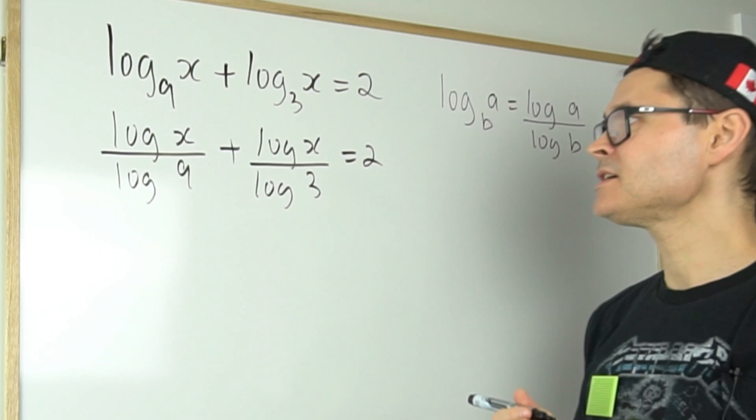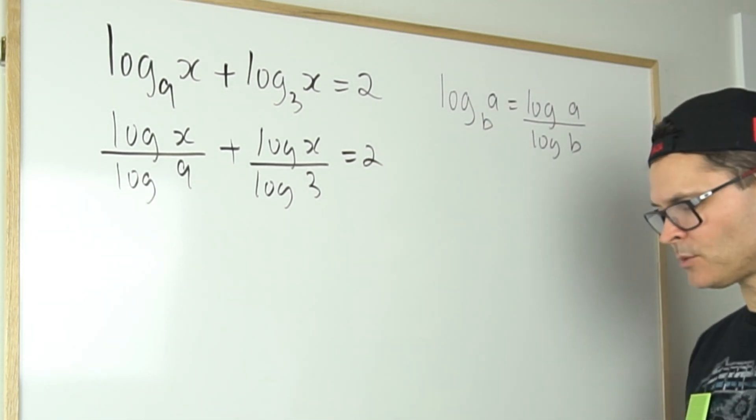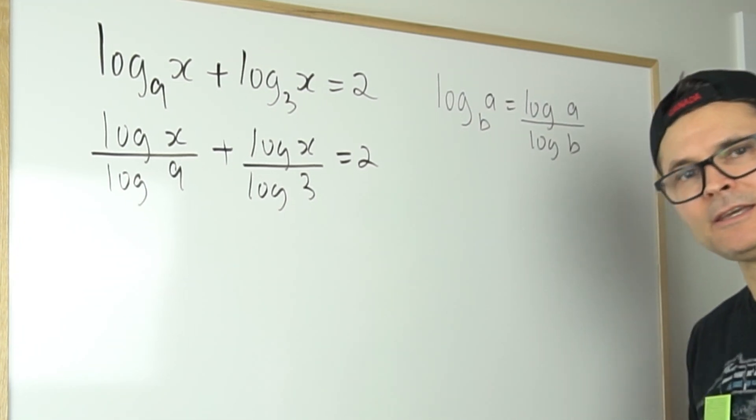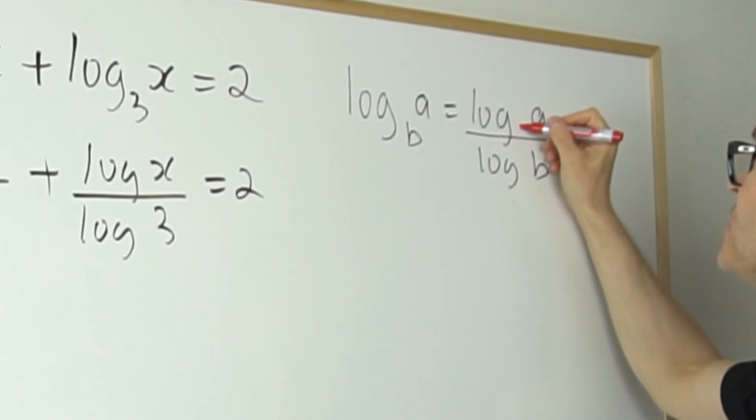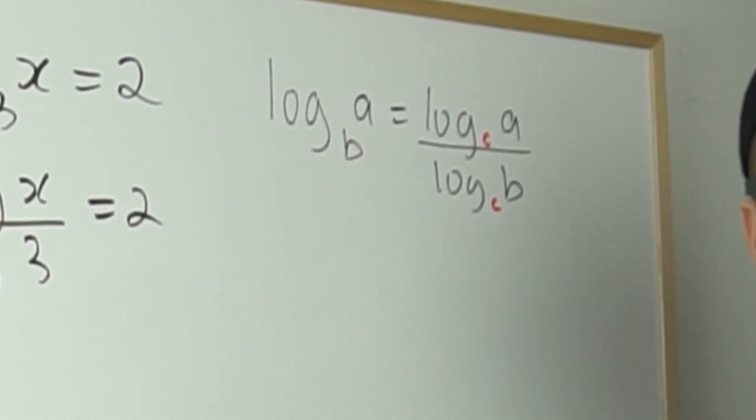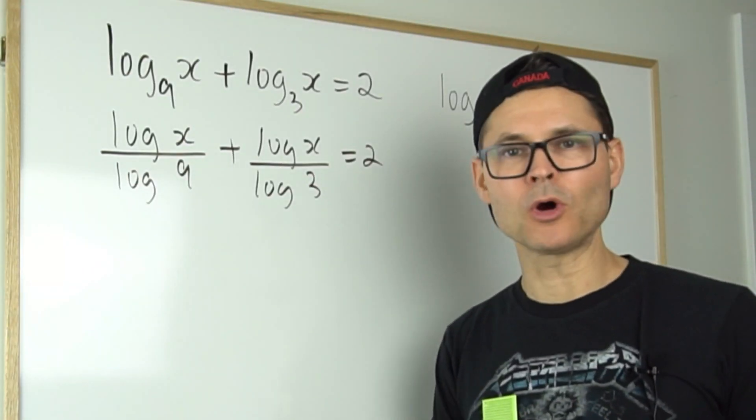Now the next thing that you can do is, with the change of base identity, the reason why it's called the change of base identity is because you can do this to change the base. So I can change the base to any choice. It should be an appropriate base of course.